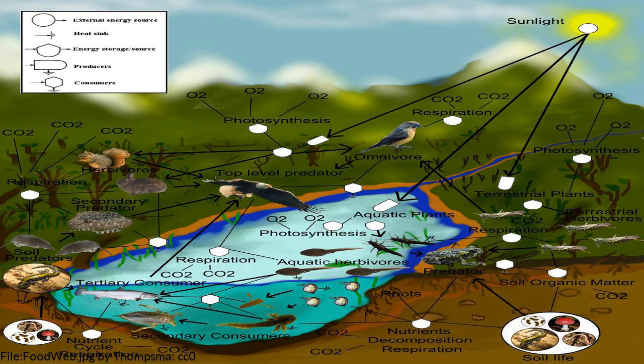A biocenosis, also called biotic community, biological community, ecological community, or life assemblage, was coined by Carl Mobius in 1877. It describes the interacting organisms living together in a habitat.